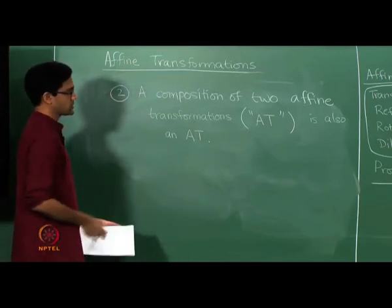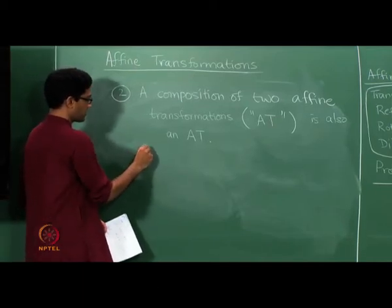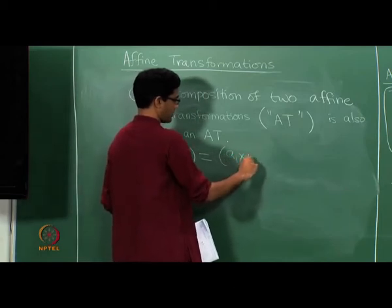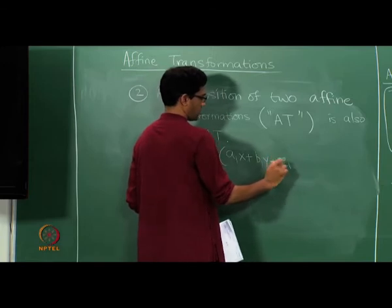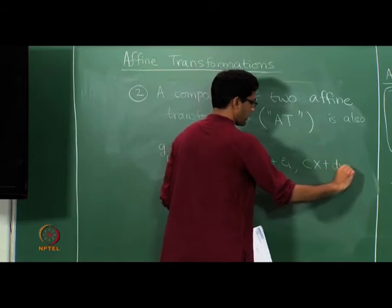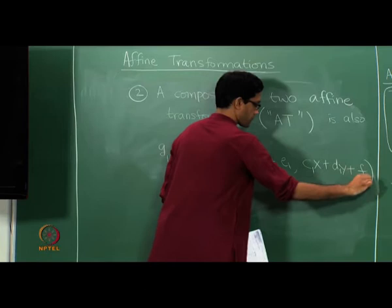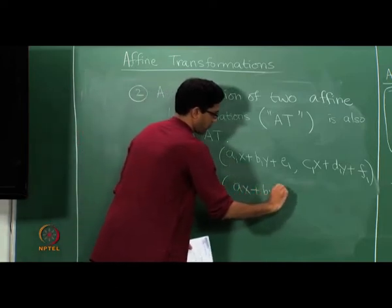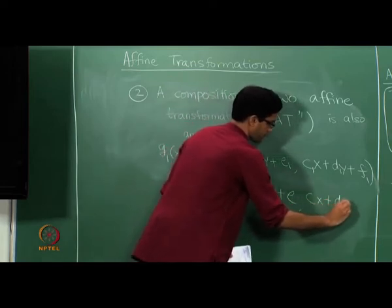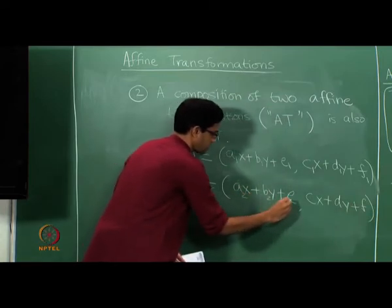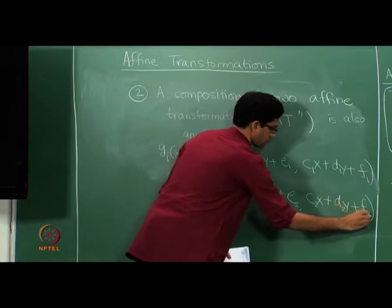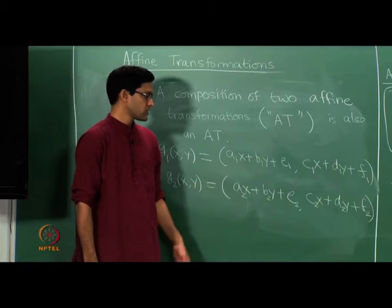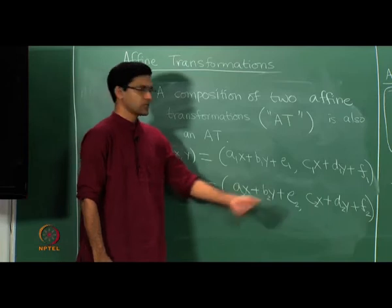Let us verify this. Suppose we have two affine transformations: G₁(x,y) = (a₁x + b₁y + e₁, c₁x + d₁y + f₁) and G₂(x,y) = (a₂x + b₂y + e₂, c₂x + d₂y + f₂). There are 12 different constants involved in total.